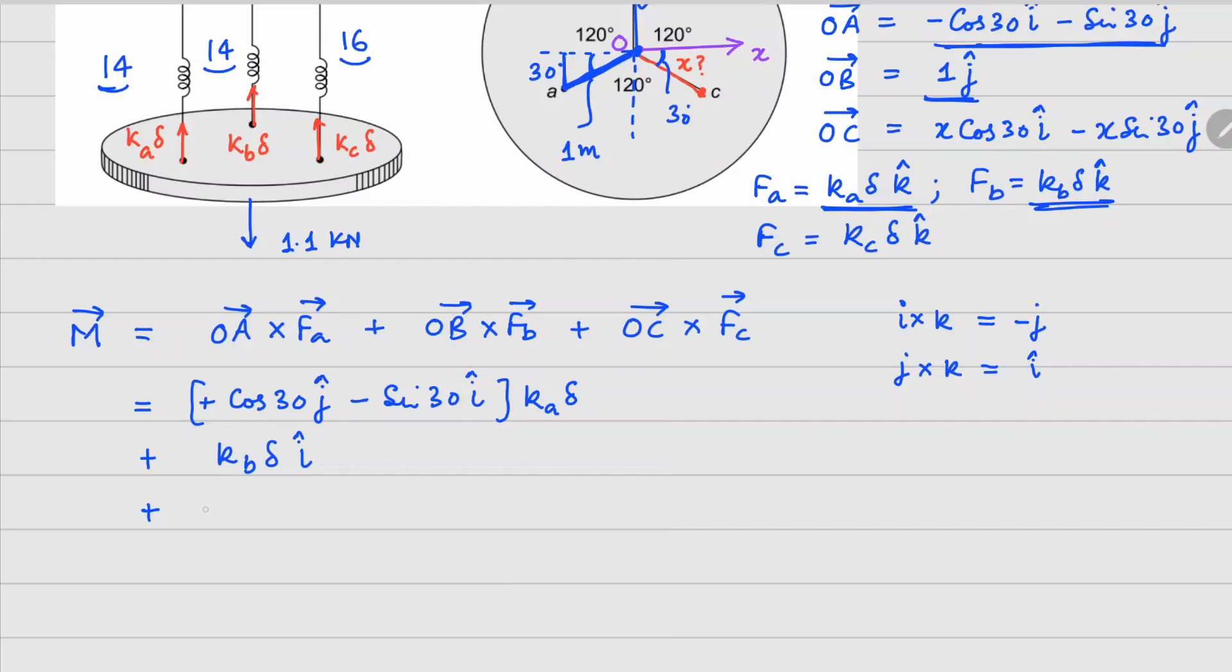This is going to give you minus x cos 30 j cap, and then minus x sin 30, which is going to give you i cap there. And the force value here is going to be kc times delta.